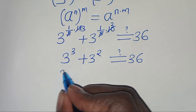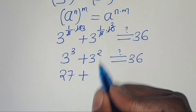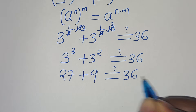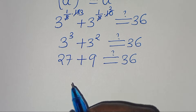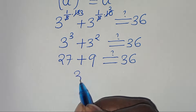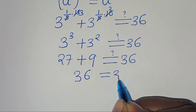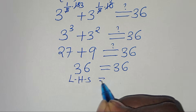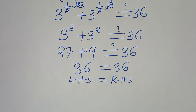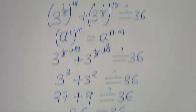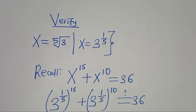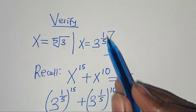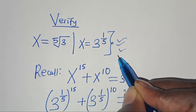3^3 is 27 and 3^2 is 9, so 27 plus 9 equals 36, which equals 36. The left-hand side equals the right-hand side, confirming that x equals the fifth root of 3, or 3 to the power of 1 over 5, satisfies the equation.